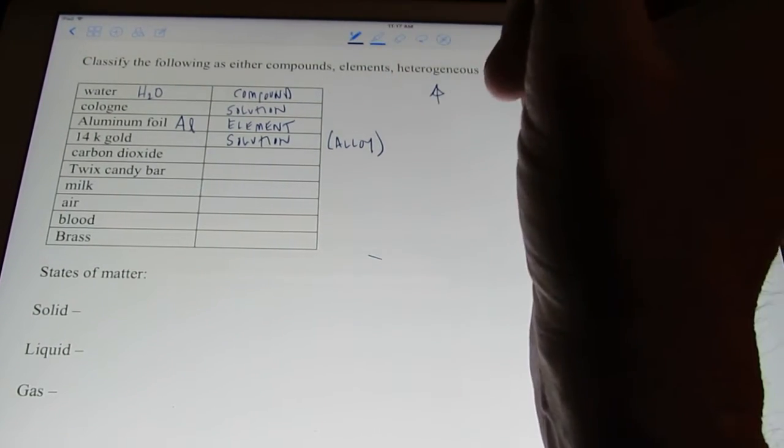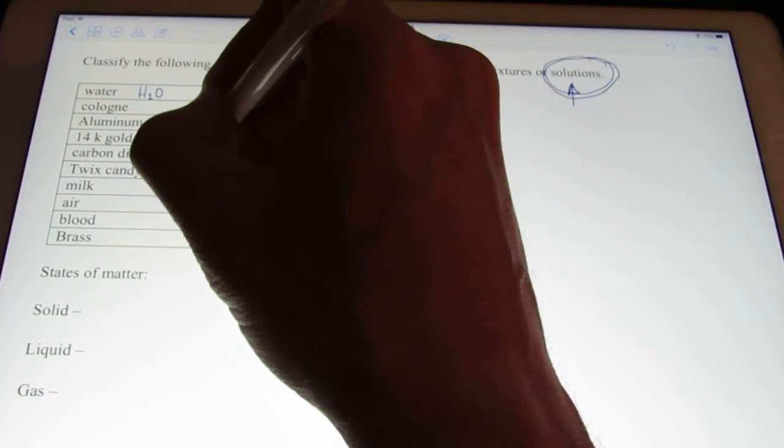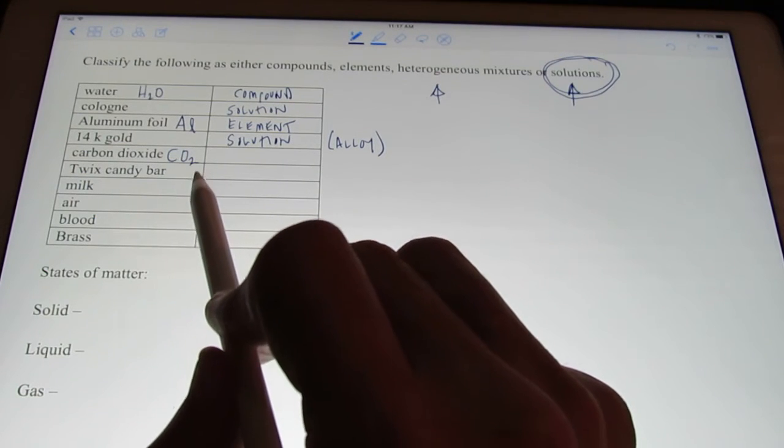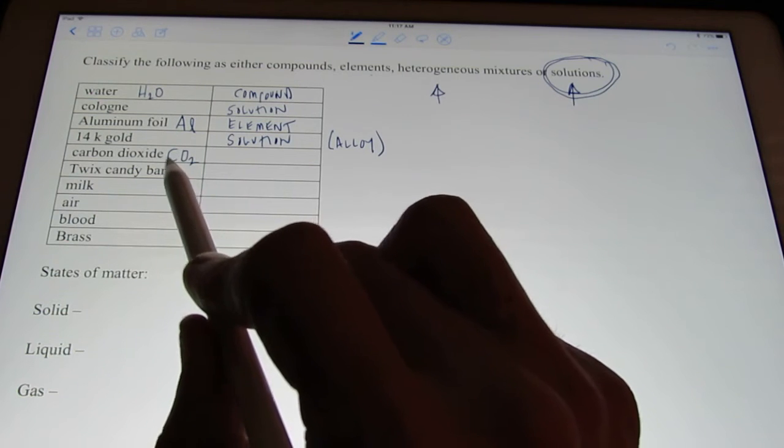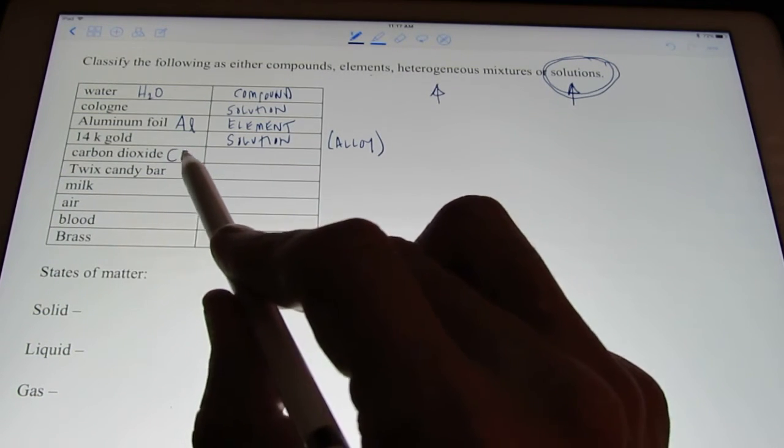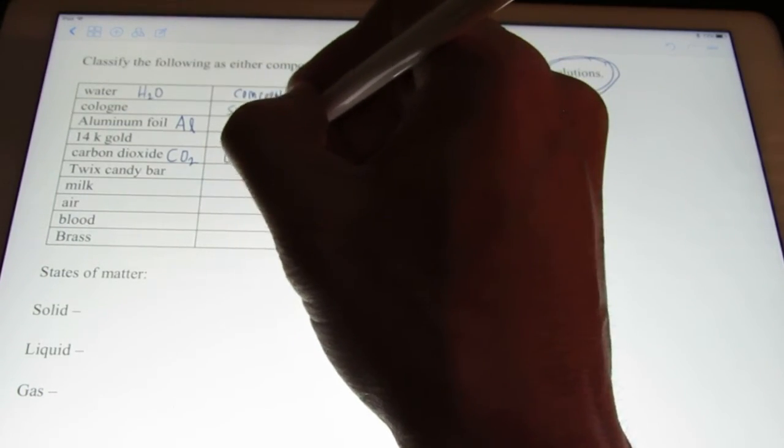All right. Carbon dioxide. Let's see. Carbon dioxide. So, the chemical formula for it is CO2. Well, it's obviously not an element because I could break that down into simpler things, can't I? It's not a mixture. It's two or more different elements chemically bonded together. So, that becomes a compound.